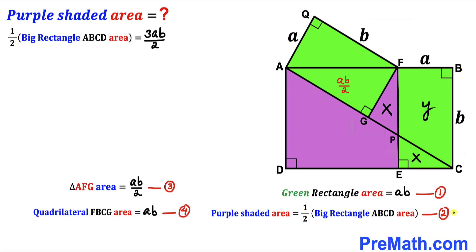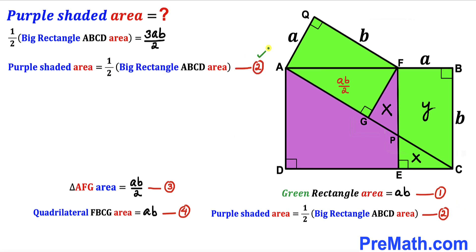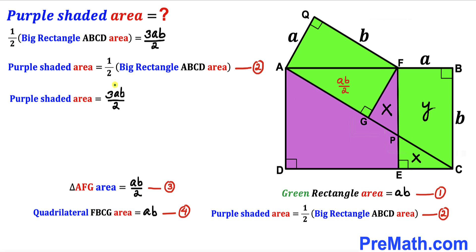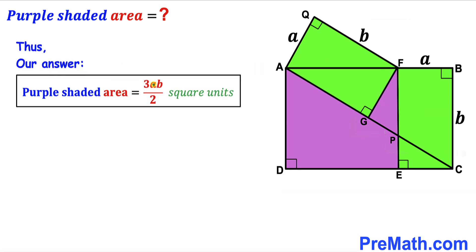Now let's apply equation two. The purple shaded area equals half of the big rectangle ABCD area, which we already figured out is 3 times AB divided by 2. So substituting that in, the purple shaded area turns out to be 3 times AB divided by 2 square units. Thanks for watching, and please don't forget to subscribe to my channel for more exciting videos. Bye!